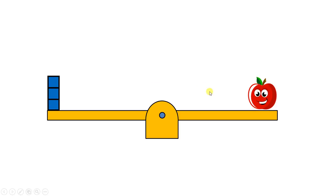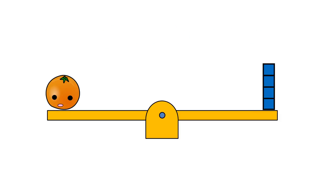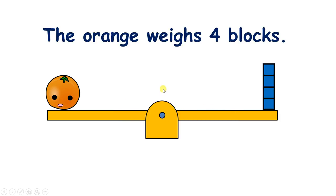So we know from this that the apple weighs the same as three blocks. And so in blocks, how much does the orange weigh? Well, our balance isn't sloping down towards one side or the other — it's horizontal. So we know that the orange weighs the same as four blocks.